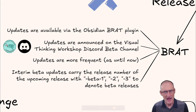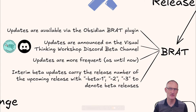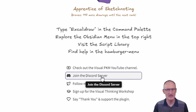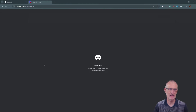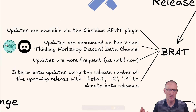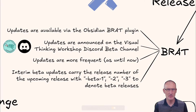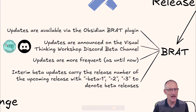Now looking at the beta testing side: this is going to be available via the BRAT plugin. Updates are going to be announced in the Visual Thinking Workshop Discord beta channel — I recommend that you join that. You'll find the link to join Discord in the splash screen when you create a new Excalidraw drawing. Updates are going to be more frequent — typically weekly, sometimes even multiple times during a week. Beta releases will carry the upcoming release number with dash beta 1, beta 2, etc.